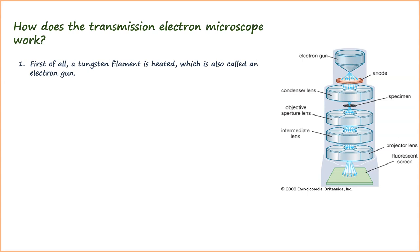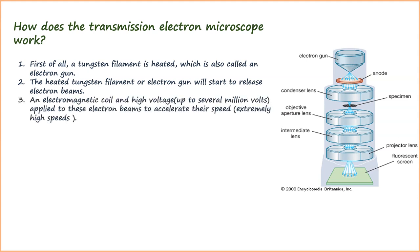The heated tungsten filament or electron gun will start to release electron beams. An electromagnetic coil and high voltage, up to several million volts, is applied to these electron beams to accelerate their speed.